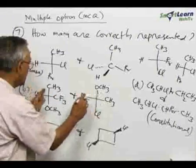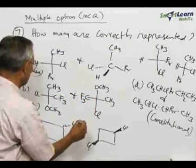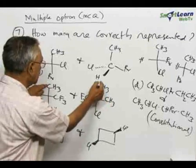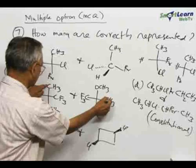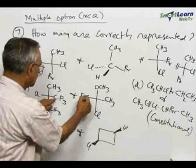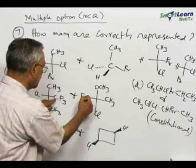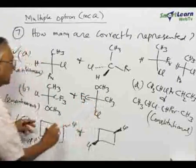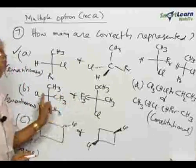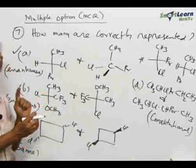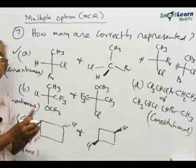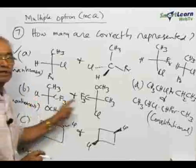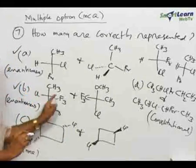We need to make a number of changes. Starting with CH3, we bring CH3 here and OCH3 here, then bring the chlorine there and OCH3 here. By making three interchanges the two structures are made identical. When one or three — that is, an odd number of interchanges — are required, the two structures are enantiomers. So the relationship stated for pair B is also correct.